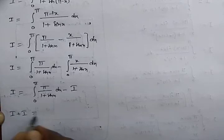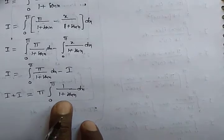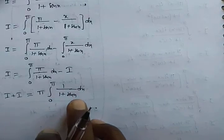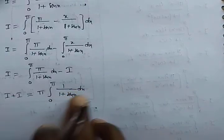So I plus I gives 2I equals π times the integral from 0 to π of 1/(1 plus sin x) dx. Multiplying numerator and denominator by (1 minus sin x), the denominator becomes (1 minus sin² x) which equals cos² x. So we get sec² x and sec x tan x terms.